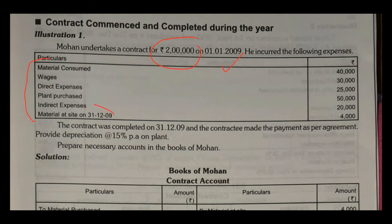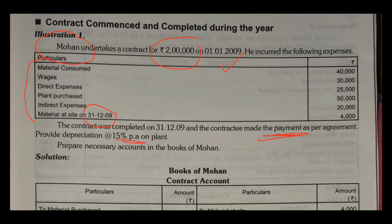The contractee made the payment as per agreement. Now this part is also very necessary — we will use it. Provide depreciation at 15% per annum on plant. It is given per annum, so you have to be careful. The plant which has been purchased will have a depreciation of 15%. Now prepare necessary accounts in the books of Mohan. Mohan is the contractor — the one who has undertaken the contract. Whatever necessary accounts are required, we prepare in their books.